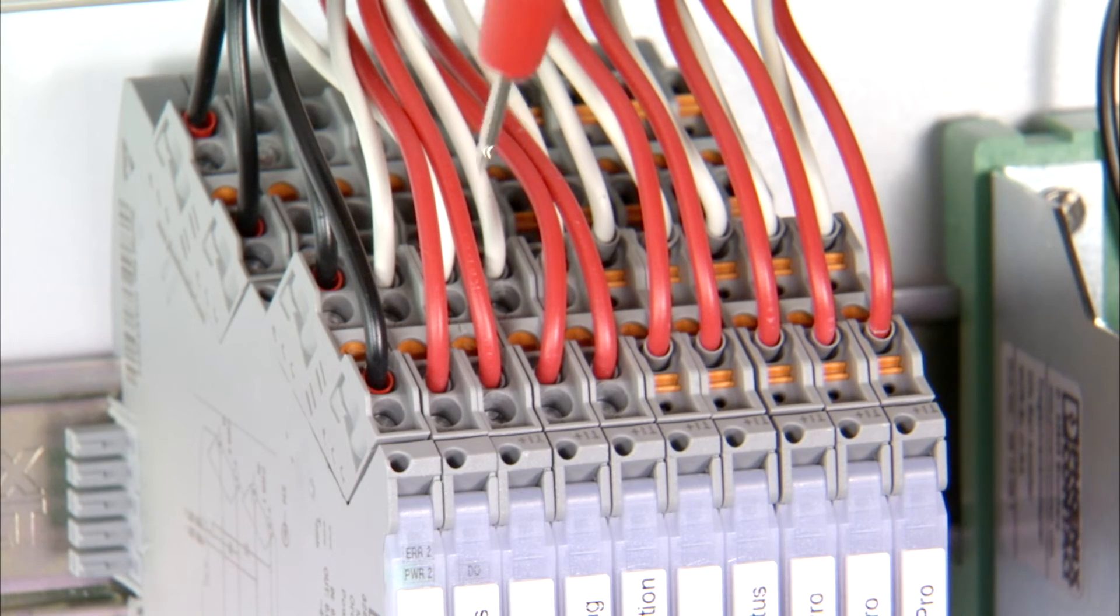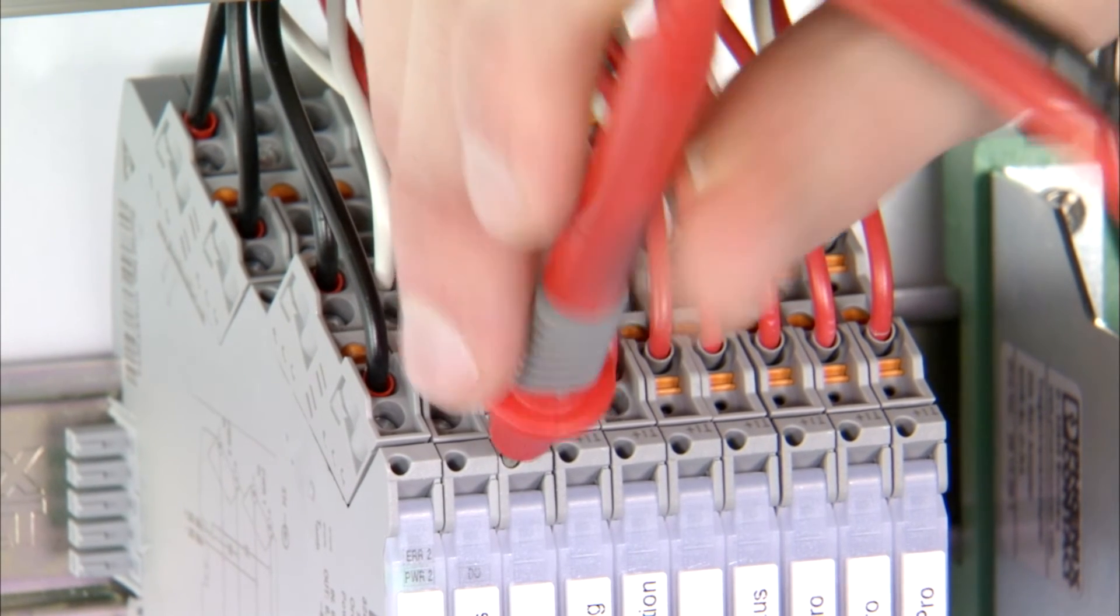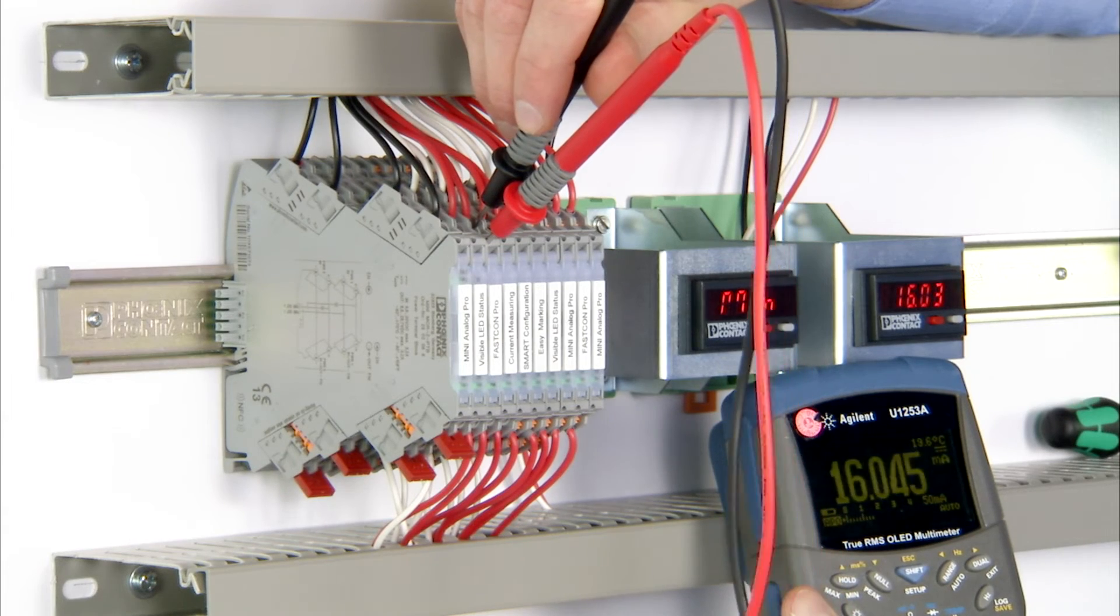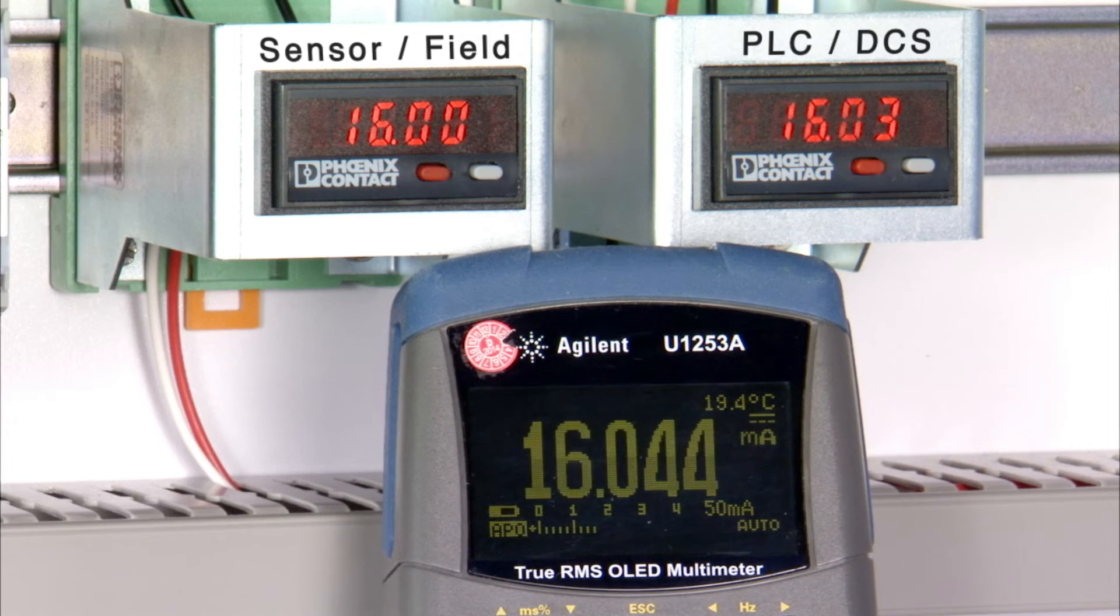In addition, Mini Analog Pro is also particularly service-friendly. Current measurement can be carried out during operation without disconnecting the circuit. With just a single measurement, the entire current loop is acquired from the sensor to the controller.